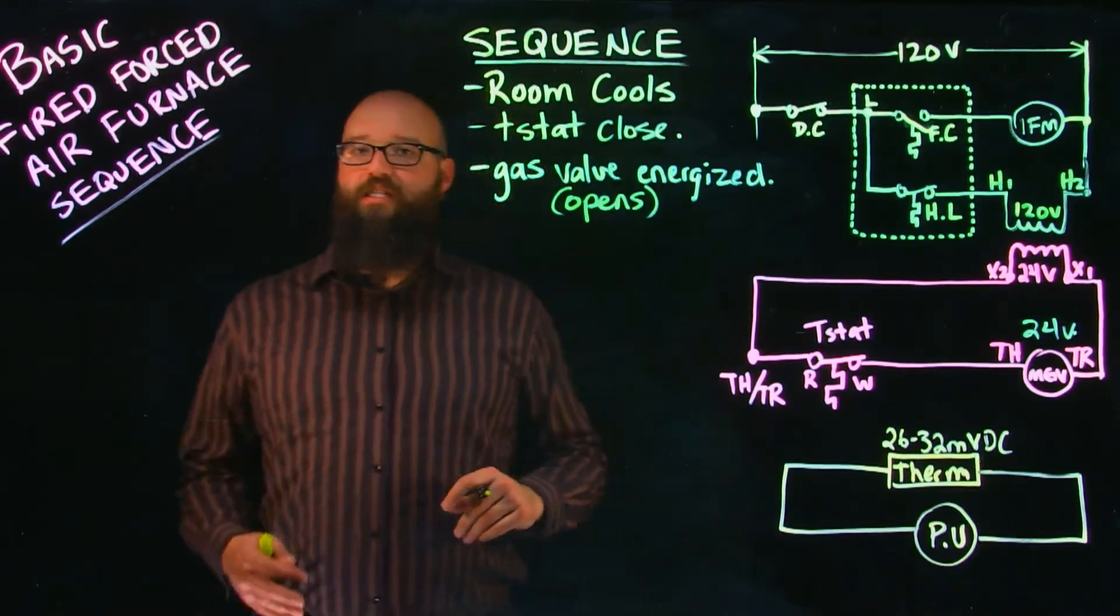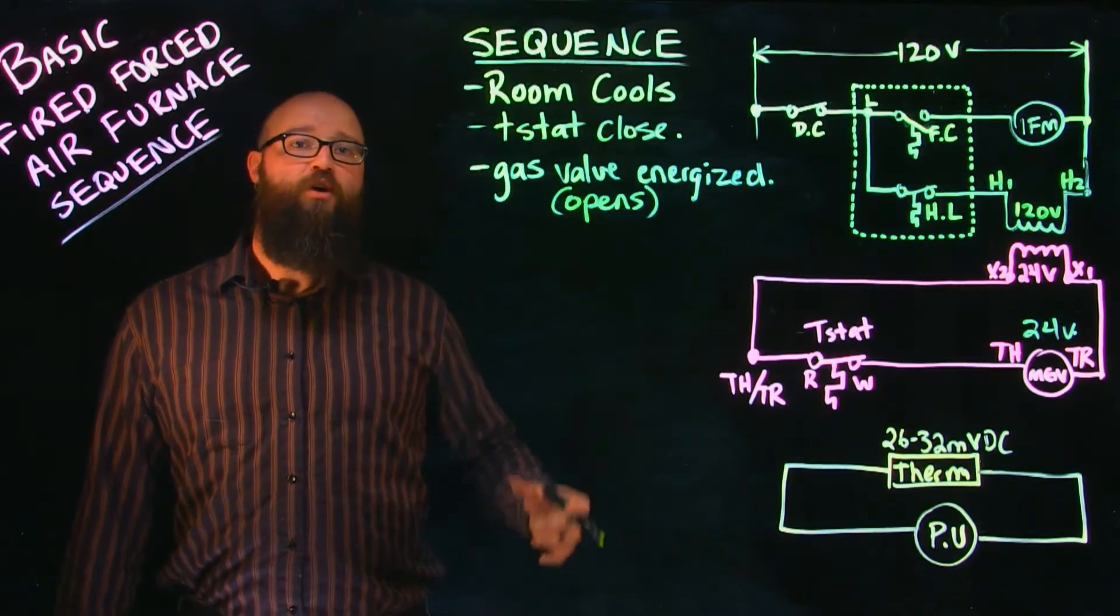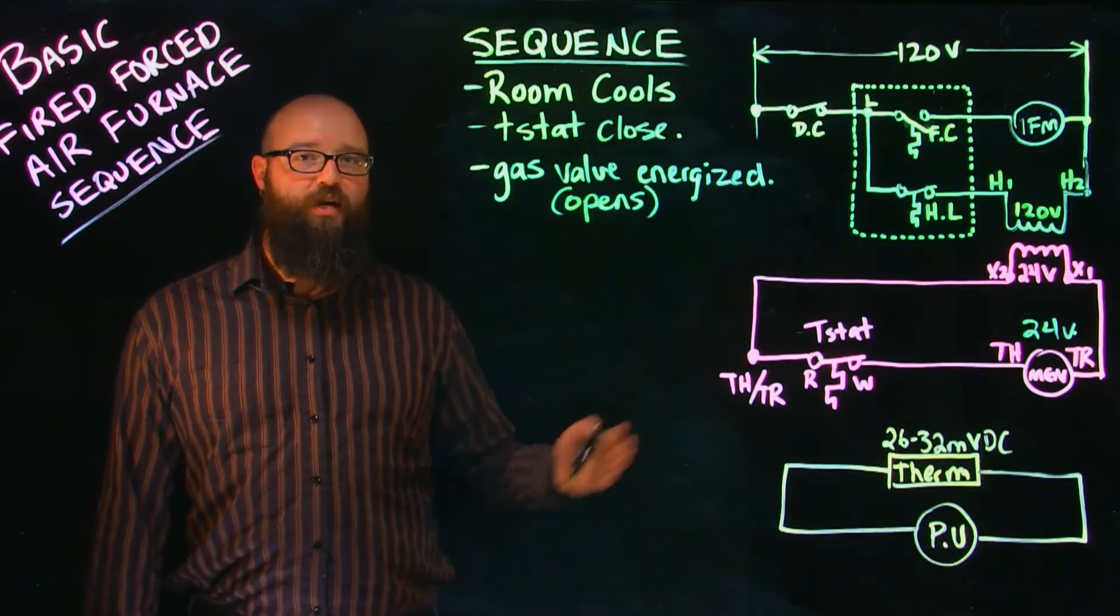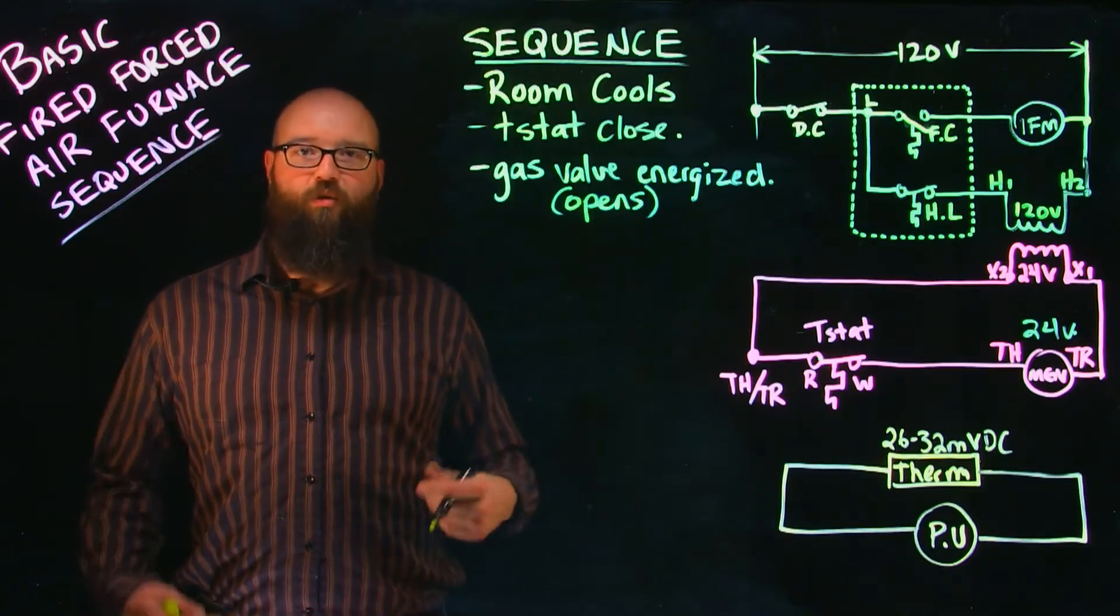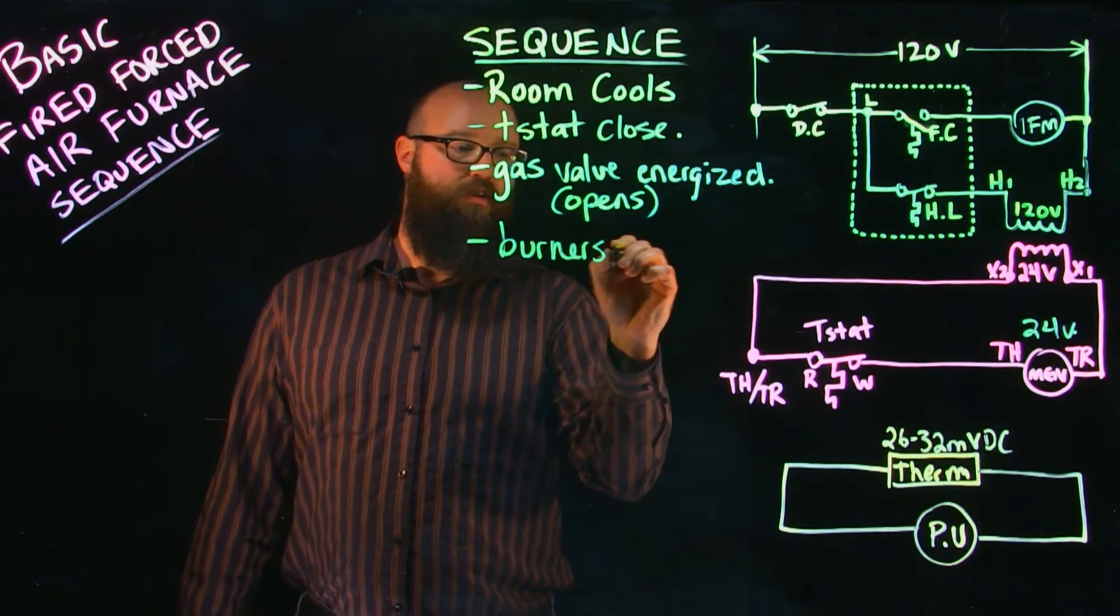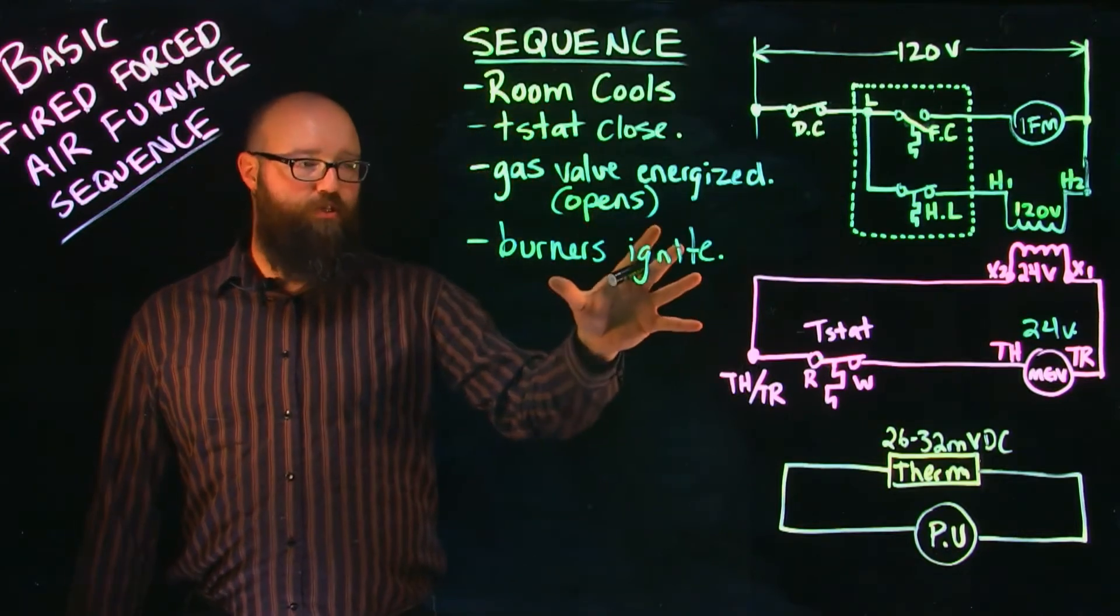Because that gas valve opens it's going to allow gas through to the burner area which is located right by our standing pilot. As soon as that gas comes into contact with the standing pilot it's going to ignite. So the next step is our burners ignite. Our burners are lit.